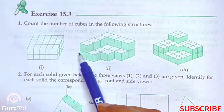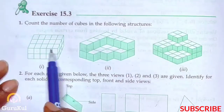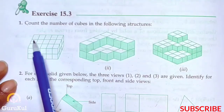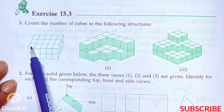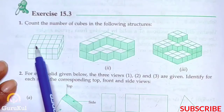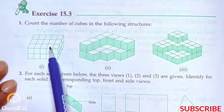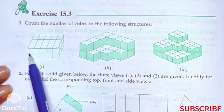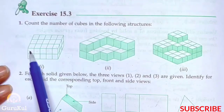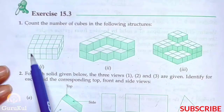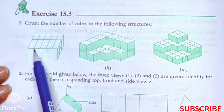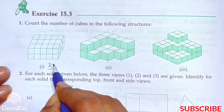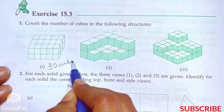Question 1, first part: we need to count the number of cubes. Counting gives us 1, 2, 3 across and 1, 2, 3, 4, 5 — so three fives are fifteen. Because the height is two cubes, fifteen into two gives us thirty cubes.